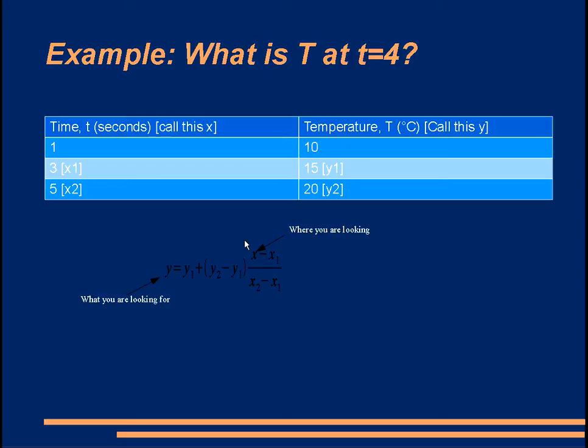Very simply, we just substitute all these in. I've already annotated them here for you. So y1 is going to be 15. Then we've got y2 is 20, y1 is 15 again. Fill all this in and you get this expression here.